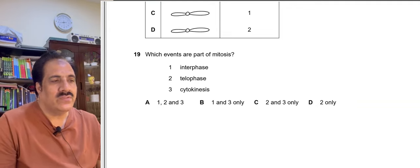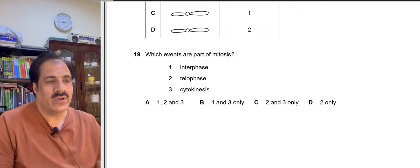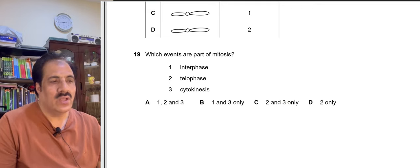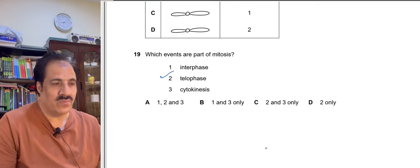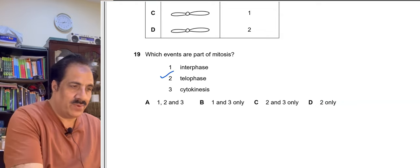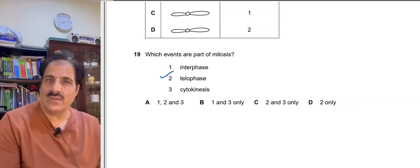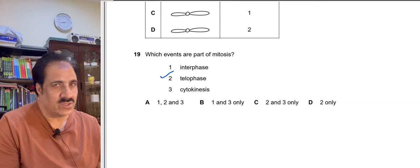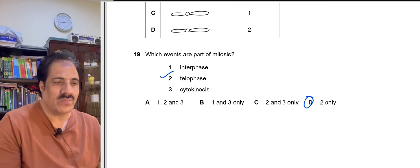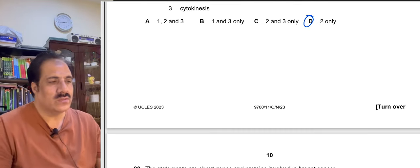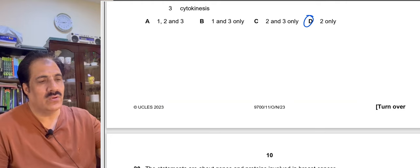Question 19: Which events are part of mitosis — interphase, telophase, and cytokinesis? Interphase occurs before mitosis, not during it. Telophase is a part of mitosis. Cytokinesis is the division of cytoplasm and is also not part of mitosis itself. Therefore option D — telophase only — is the correct answer.